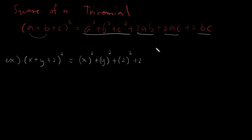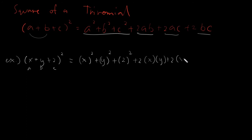Plus twice — it's always there. A would be X, B would be Y, and C would be 2. So we have twice AB: X times Y. Plus twice AC: X times 2. And lastly, twice BC: Y times 2.